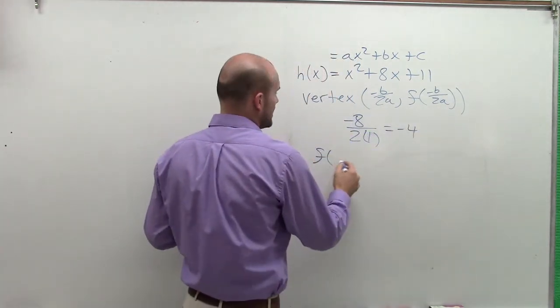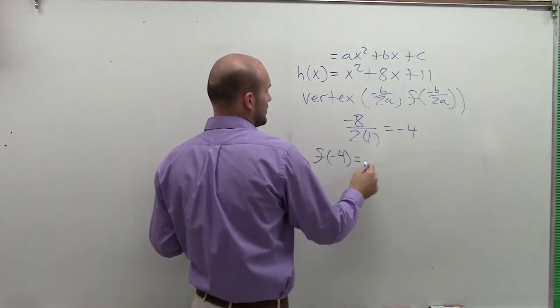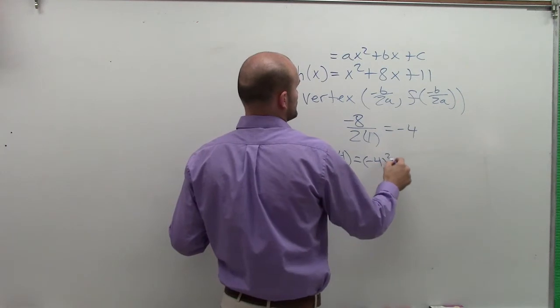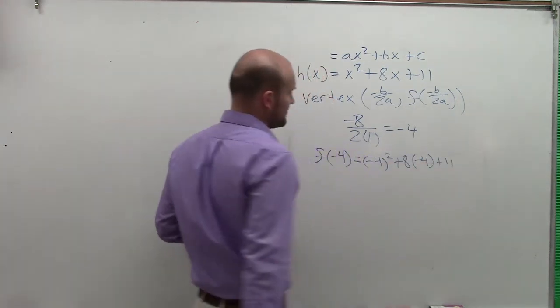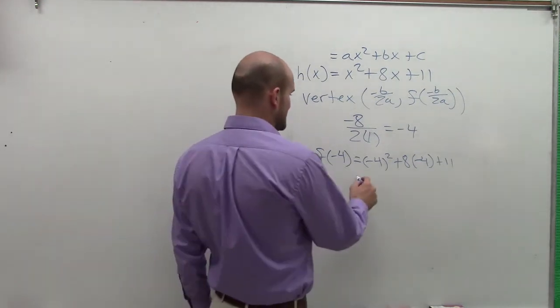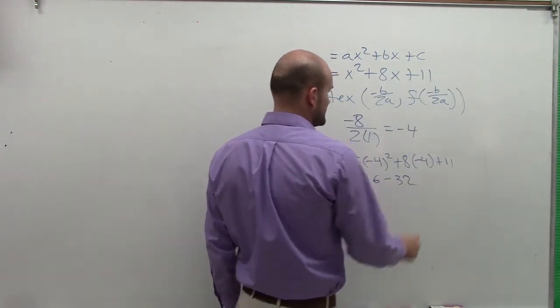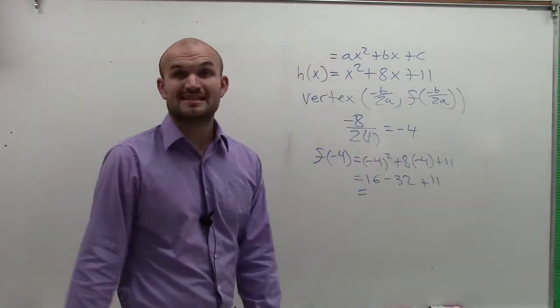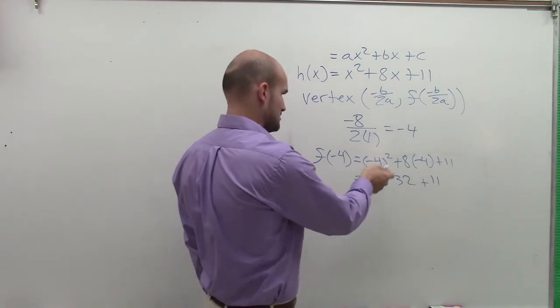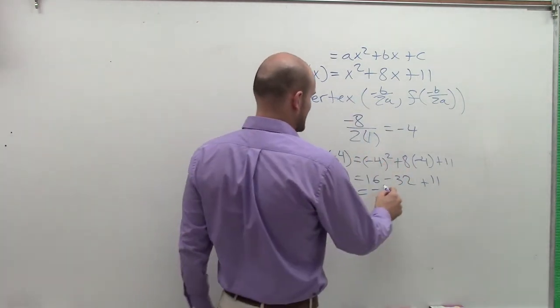Then I take my function of what my opposite of b over 2a is and do f of negative 4, which is negative 4 squared plus 8 times negative 4 plus 11. So negative 4 squared is 16. 8 times negative 4 is negative 32 plus 11. 16 minus 32 is negative 16. So negative 16 plus 11 is going to be negative 5.